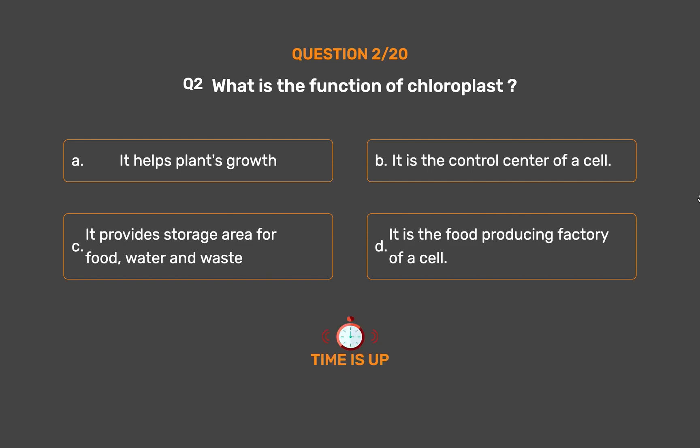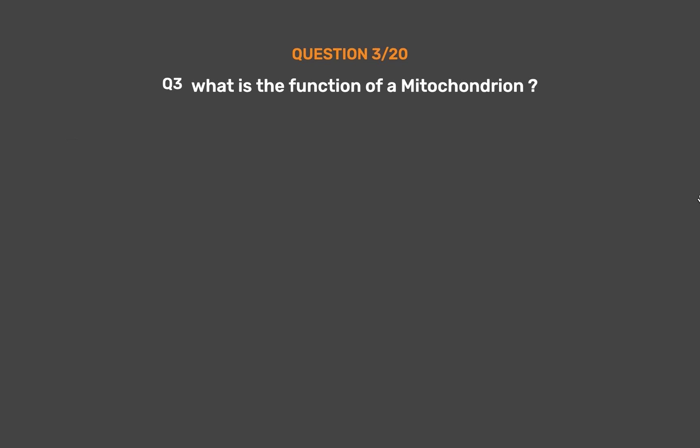The correct answer is Option D. It is the food producing factory of a cell.